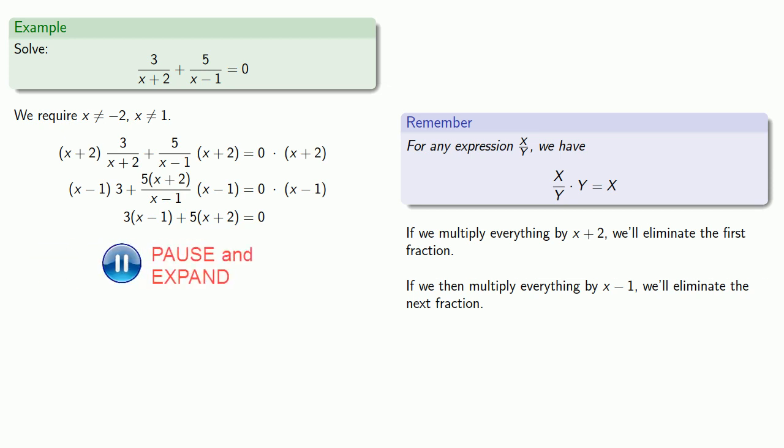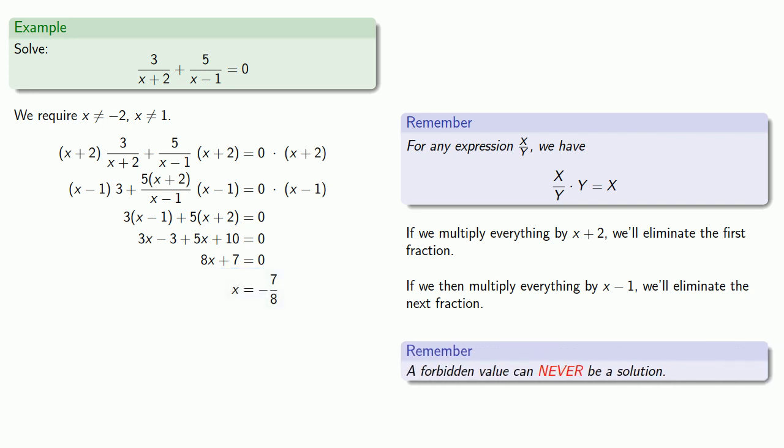So let's expand, collect our like terms, and solve. And at this point, it's worth remembering that while we have a solution, a forbidden value can never be a solution. And so we need to make sure that this solution is not one of the forbidden values. And since the only forbidden values are negative 2 and 1, x equals negative 7/8 is fine, and so that will be our solution.